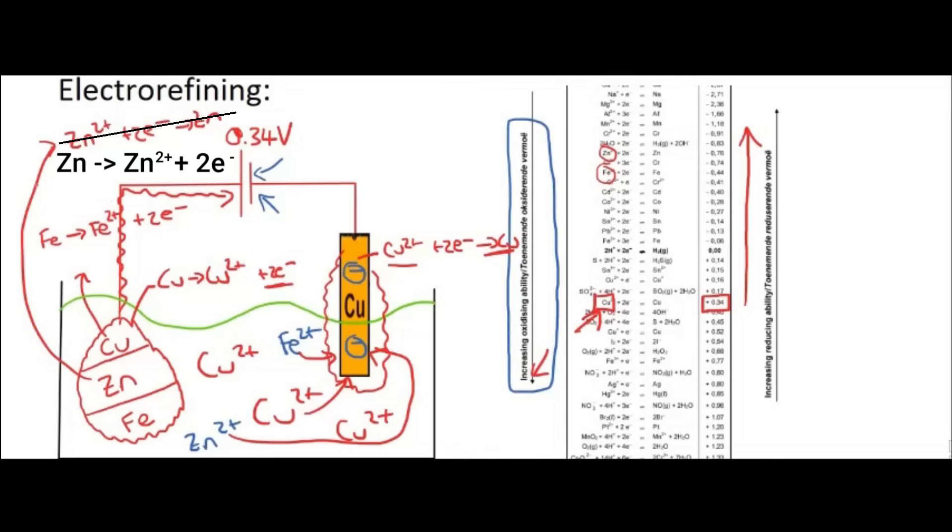So guys, in an exam, they love to ask this. They love to ask, or they love to see whether you can understand that the zinc and the iron are going to oxidize. However, they are not going to, sorry guys, I see over here I made a mistake. That was meant to be zinc turns into zinc 2 plus plus 2 electrons.